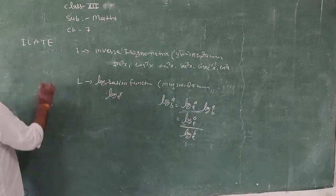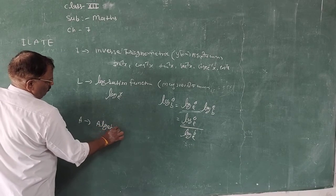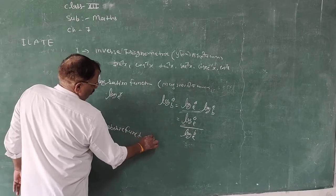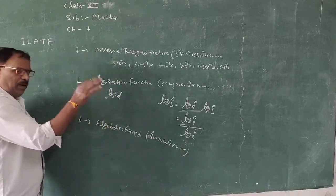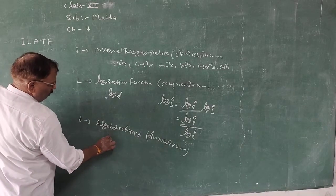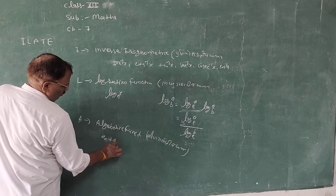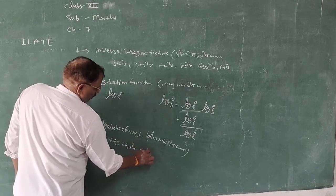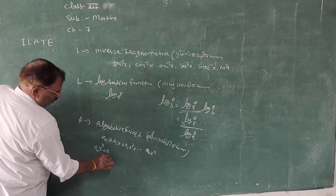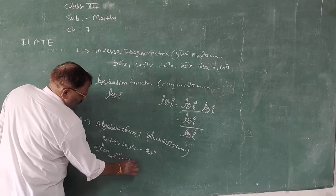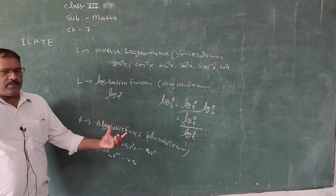A stands for Algebraic Function — बीजीय फलन. There are 20 counted functions in it. These are functions involving powers of x: a0 + a1x + a2x² + ... + anx^n. So any function with powers of x is algebraic.